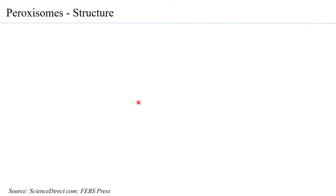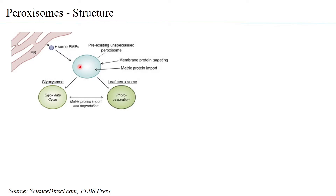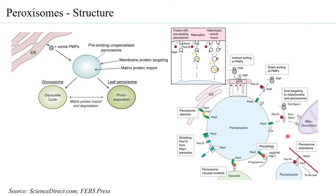Because peroxisomes are the site of both synthesis and degradation of hydrogen peroxide, this organelle is named the peroxisome. Peroxisomes can arise from the endoplasmic reticulum, and then take up several proteins from surrounding organelles to become mature. In plants, many peroxisomes get converted into a specialized organelle called the glyoxysome, within which the glyoxylate cycle occurs, while others remain as peroxisomes where photorespiration happens.